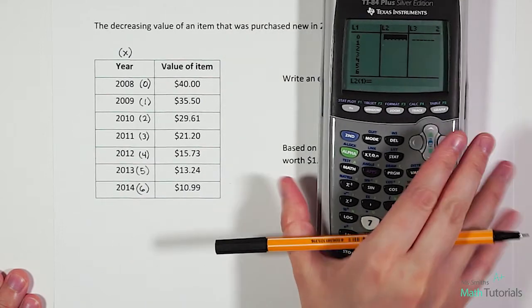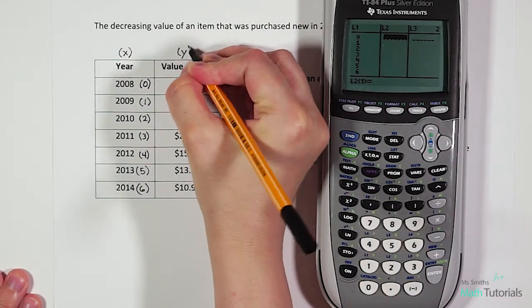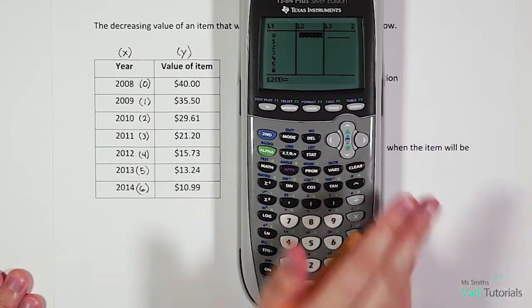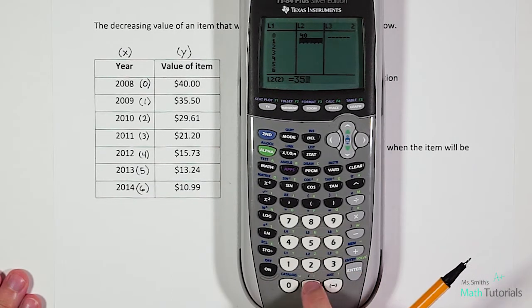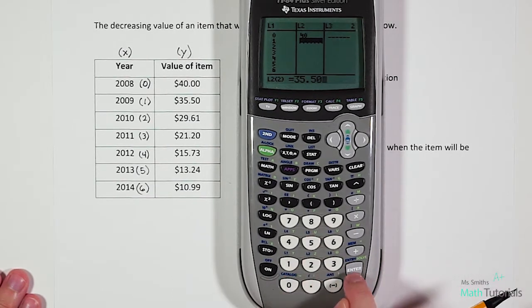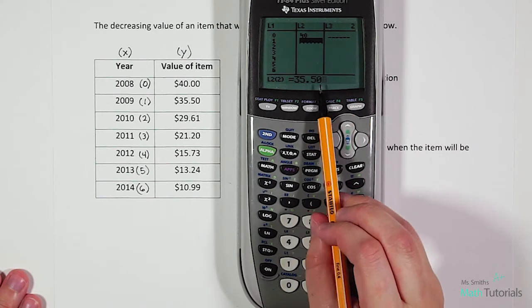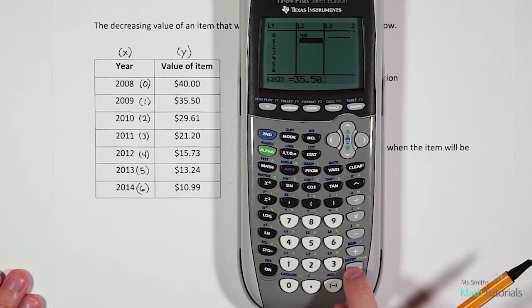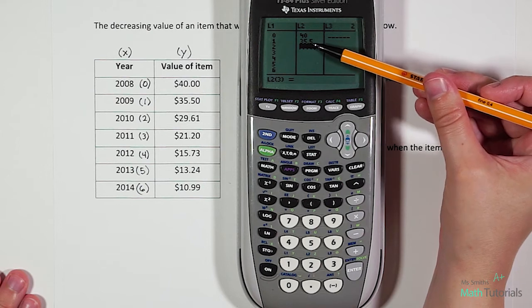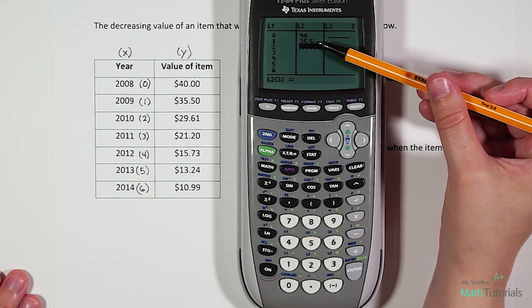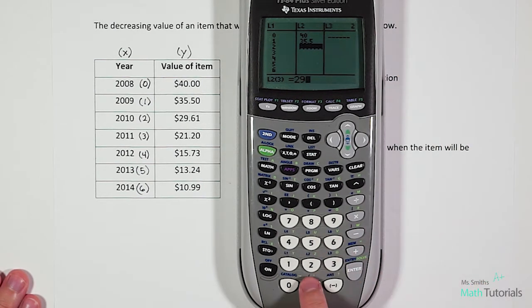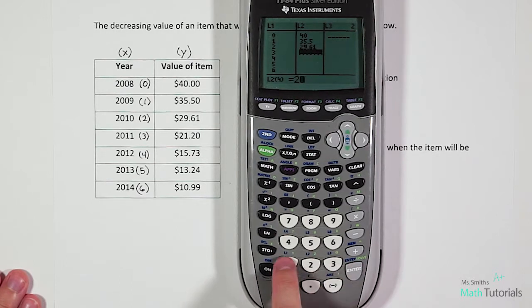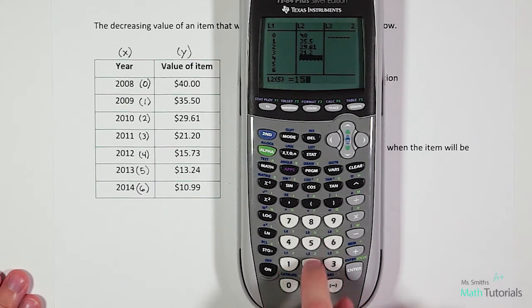For our list two, we're going to put in our Y values. $40, $35.50. Now you'll notice I put a zero in, 50 cents, and when I hit enter, the zero is not going to show up. 0.5 and 0.50 are the same thing. 29.61, 21.20, 15.73, 13.24, and 10.99.